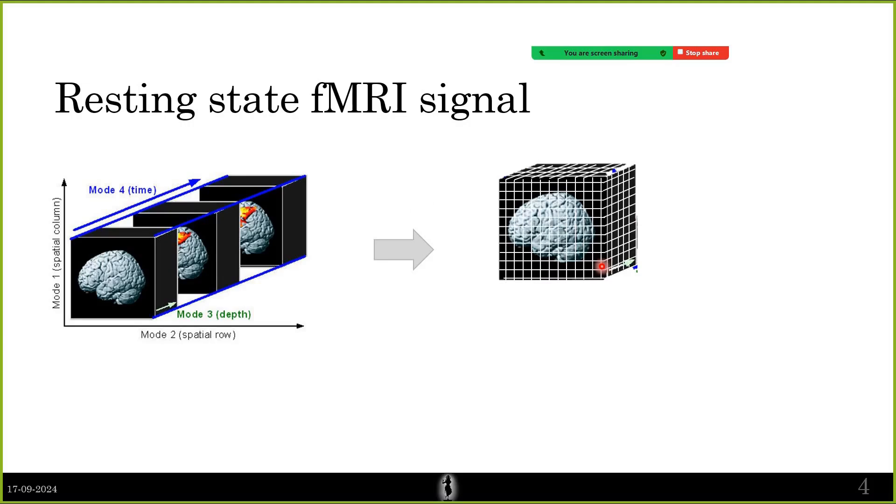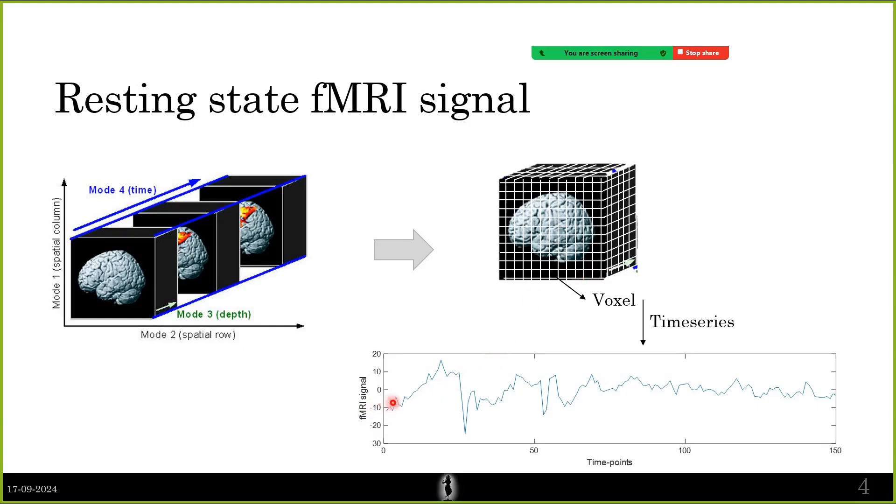It's divided into what are called voxels. In a two-dimensional image you have pixels, but here in 3D you have a voxel, which stands for volumetric pixel. Every voxel can be thought to have a time series. This is the time series corresponding to the voxel, and this is basically the fMRI signal that you have.